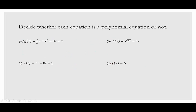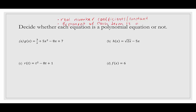Here we're going to decide whether each equation is a polynomial equation or not. The rules: a polynomial equation must have real number coefficients — those are the numbers in front of variable terms — and a real number constant. Also, the exponent of each term must be a non-negative integer.